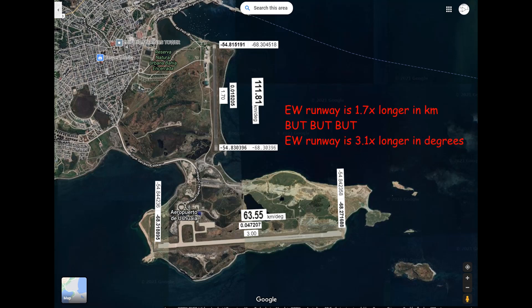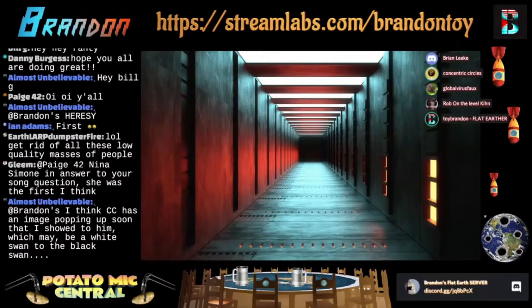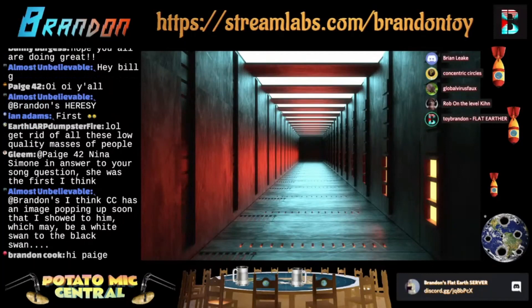So Brandon and Jeremy, please note that even though the east-west runway is 1.7 times longer than the north-south runway when you measure the distance in kilometers along the ground, when you measure the degrees of difference it's 3.1 times longer. So how are you going to explain that? You know, you can't point to your model and say, 'Well, this is how it works on our model, therefore our model is correct.' You have to give us real world empirical data, in my opinion.